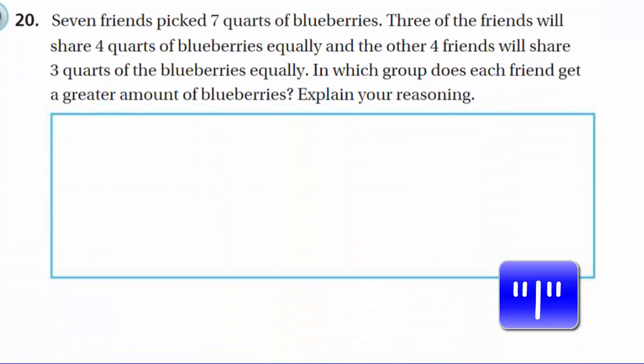Now 7 friends pick 7 quarts of blueberries. Three of the friends will share 4 quarts of blueberries equally. Let me come back over here. I keep underlining that word. And the other 4 friends will share 3 quarts of blueberries equally. In which group does each friend get a greater amount of blueberries? Explain your reasoning.